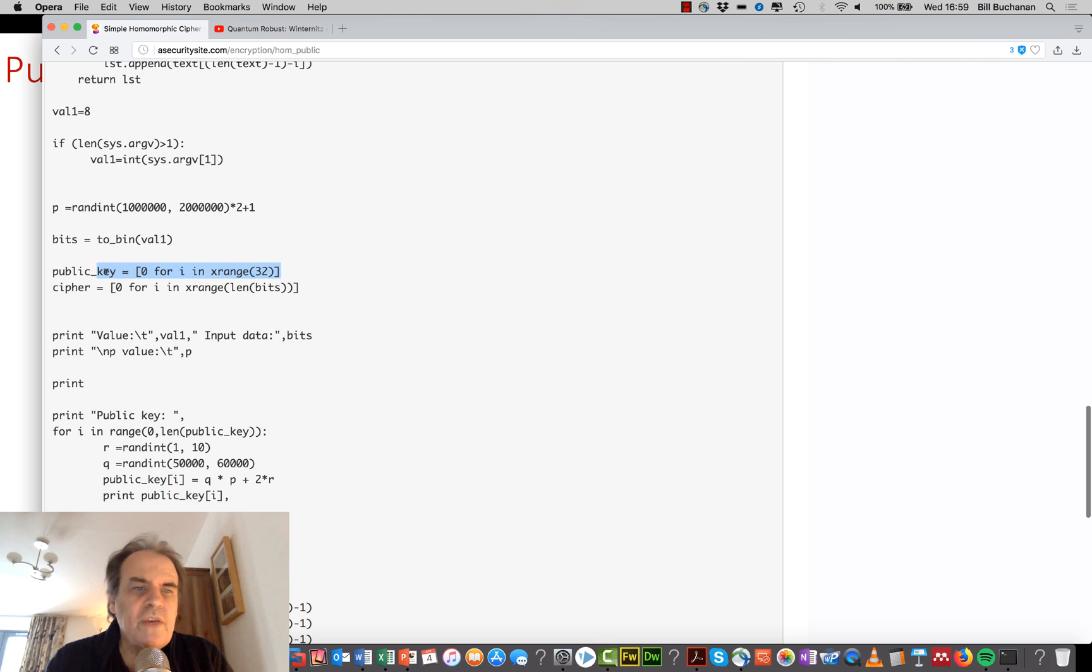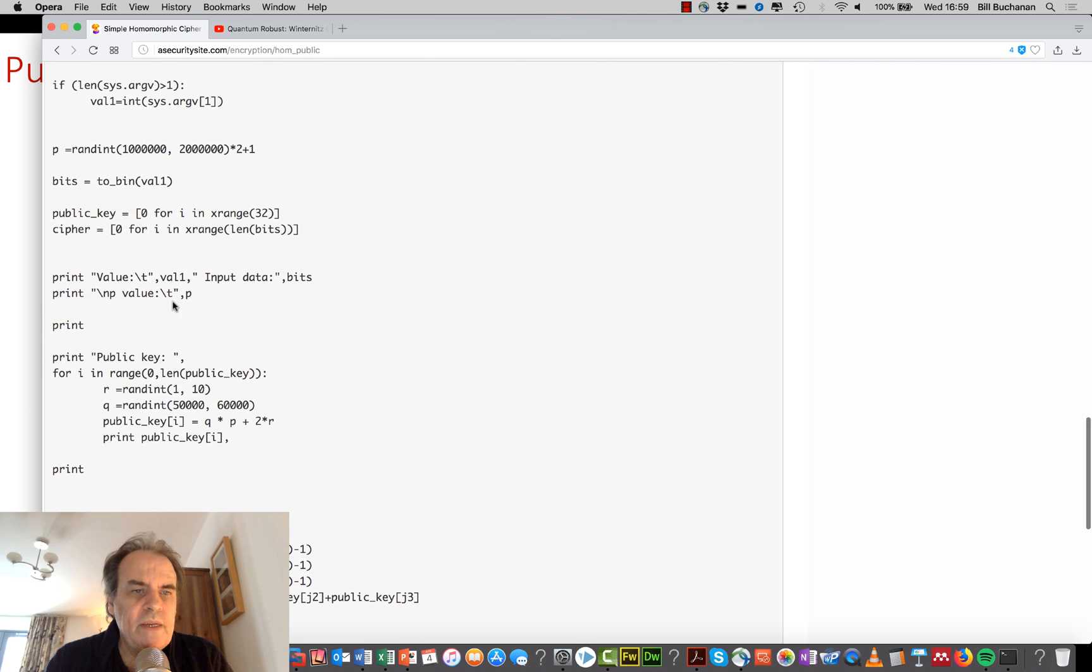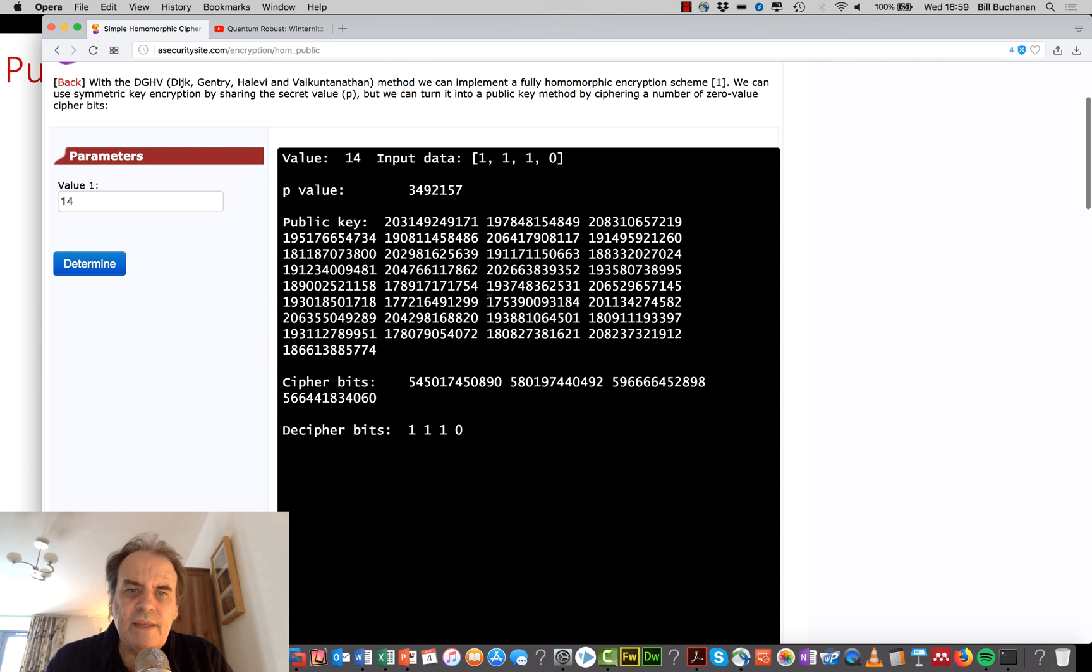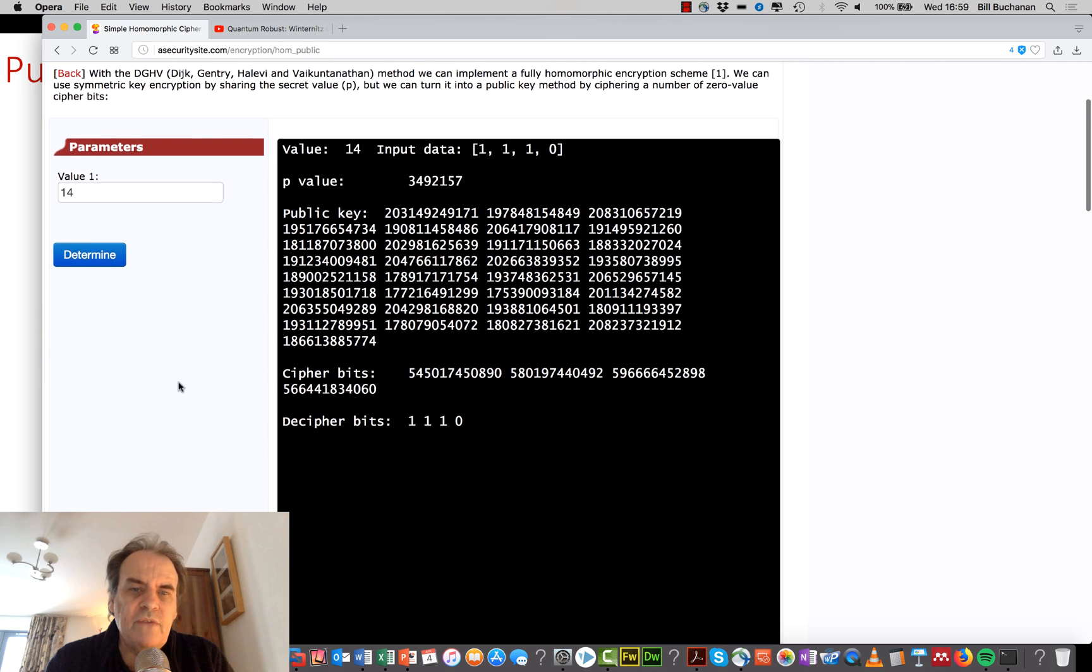After that, we're going to create our public key. It's setting this all up as zeros initially, but there'll be 32 of those values. And then we're going to create our cipher output, which is equal to the size of our number of bits in our value. So the public key, as I said, will be generated from a number of ciphers for a message of zero. And then we can publish that as our public key. So there's a public key there, instead of two random values.